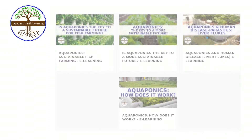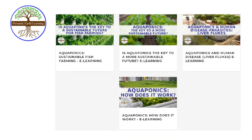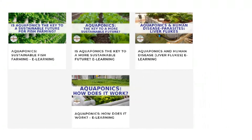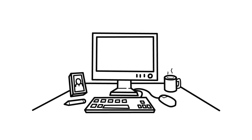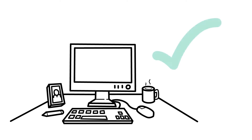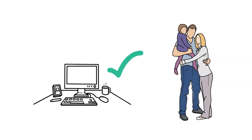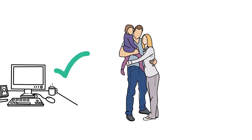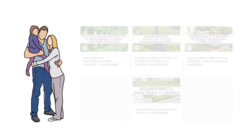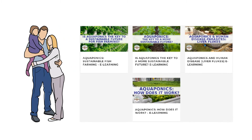Dynamic Earth Learning Online short courses take around an hour to complete and they're easy to assign to students. The courses are self-grading and have a course completion certificate at the end of each course. Our courses are quick, easy, and effective for teachers and parents, and are an affordable way to teach your student about earth science, sustainability, and agriculture.